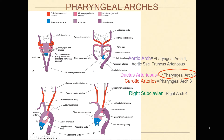One important thing we discuss is the formation of different main branches of arteries, such as your common carotids, your subclavians, your aortic arch, your pulmonary trunk, and your ductus arteriosus. We're going to go into those in a little bit of detail right now.